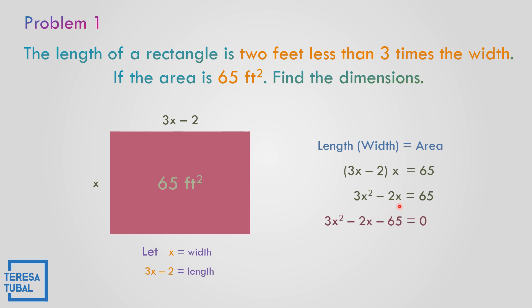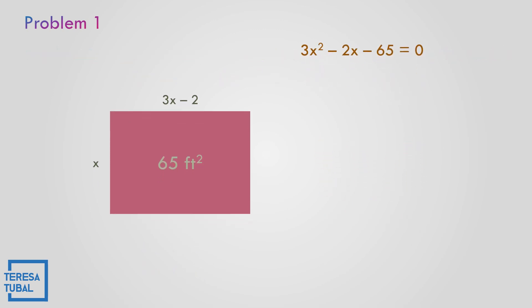Positive 65 goes to the left, change the sign. So bring down 3x squared, bring down negative 2x, and then minus 65. Let us get the product and the sum. The product is negative 195. How to get negative 195? 3 times negative 65 is negative 195. And then the sum is equal to negative 2.